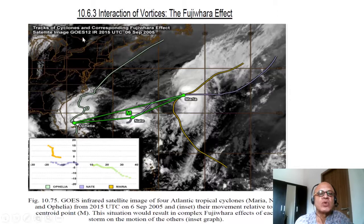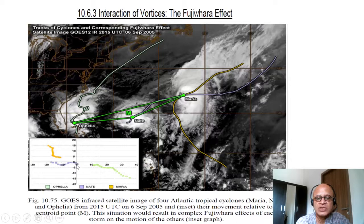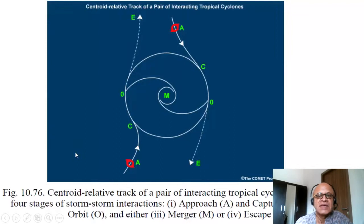Here is an example of a GOES-12 IR image at 2015 UTC from 6th September 2005, looking at Maria, Nate, and Ophelia and their movement relative to a centroid point. The situation results in a complex Fujiwara effect of each storm on the motion of the others. If you project them onto a centroid with respect to each other, you can see they are moving, and this can be seen here.